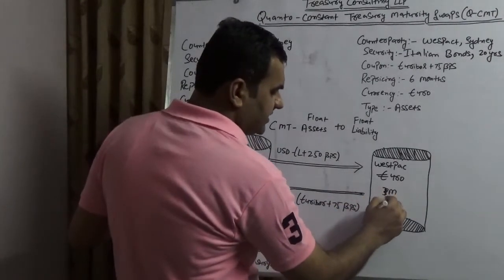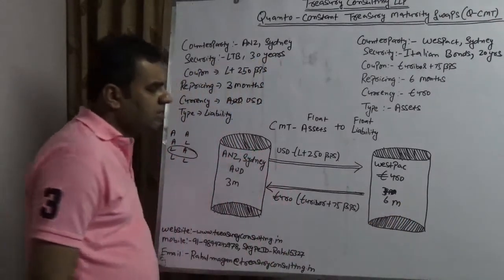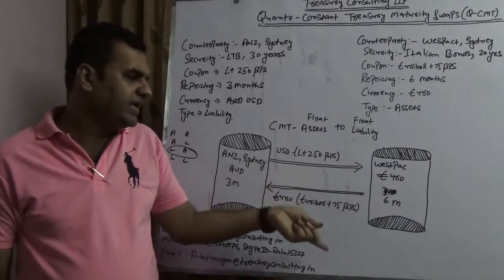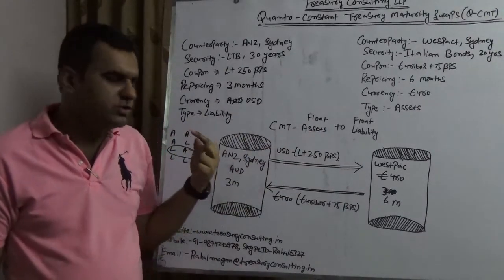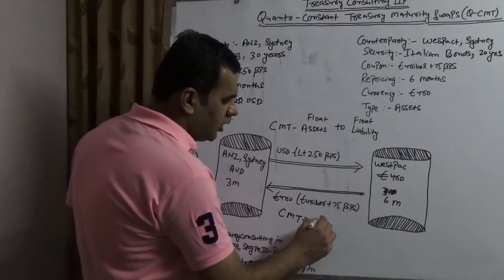But the point is repricing is in risk. Here it is wrongly written three months, this is six months. The issue is ANZ is paying dollars but getting Euro. So there is a CMT which is getting created which is Euro dollar CMT.